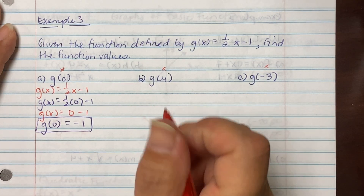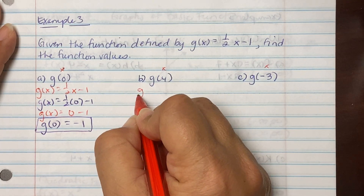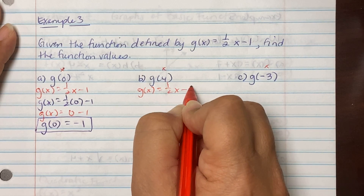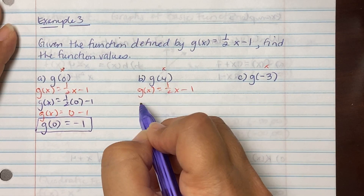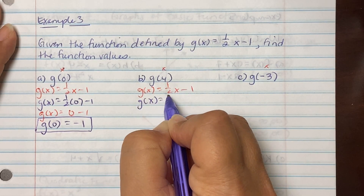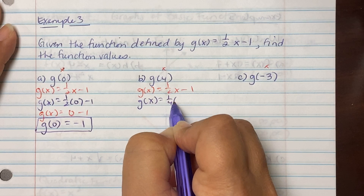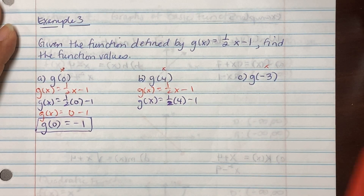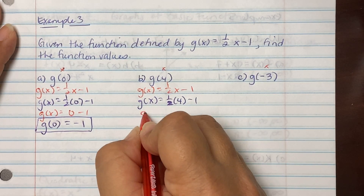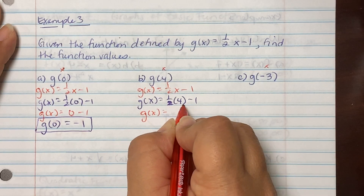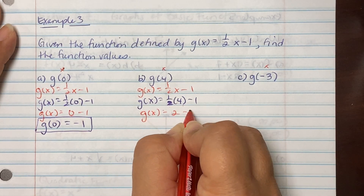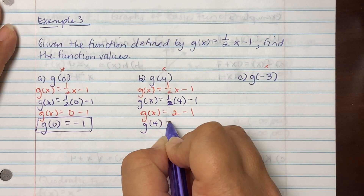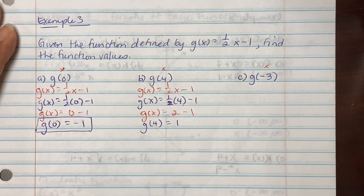For g(4): using g(x) = ½x − 1, we plug in 4. Half of 4 is 2, minus 1 gives us 1. So when we plugged in a 4, it resulted in a value of 1.